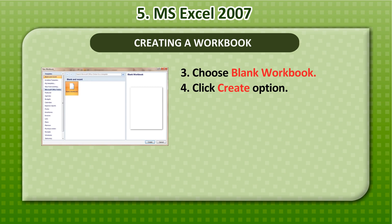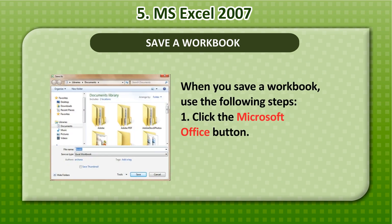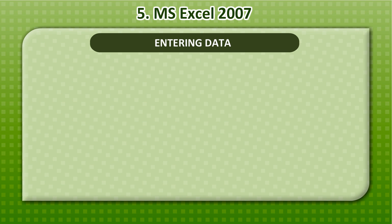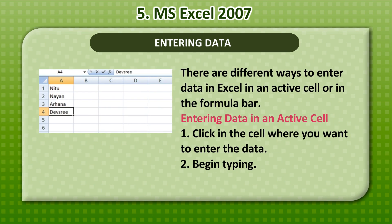Save a Workbook: When you save a workbook, use the following steps. 1. Click the Microsoft Office button. 2. Click Save — the Save As dialog box will open. 3. Specify the path and click Save.